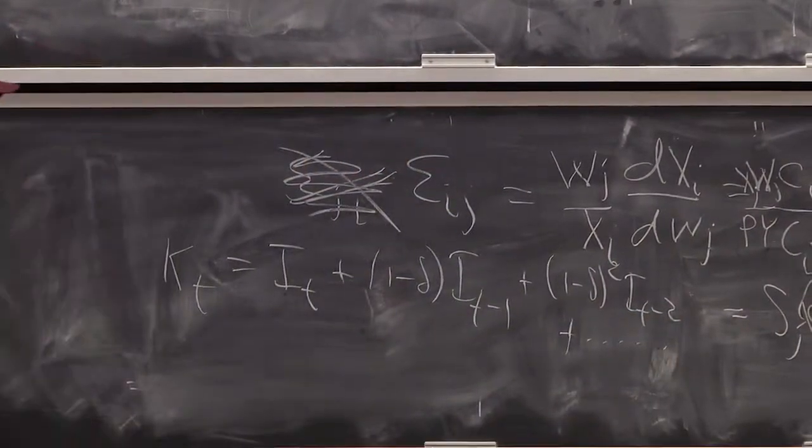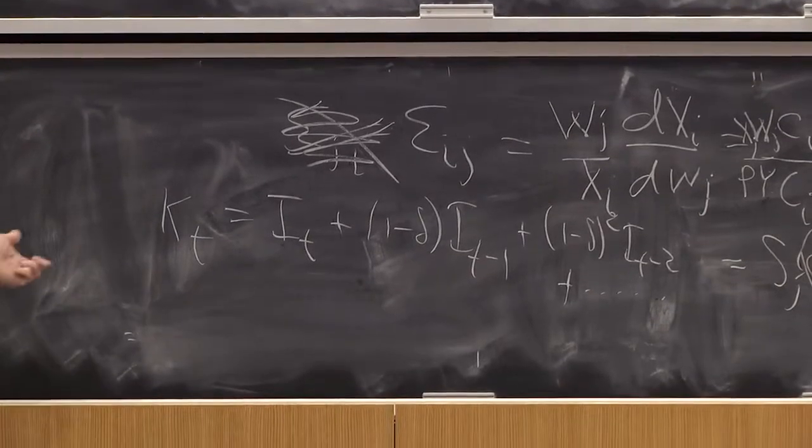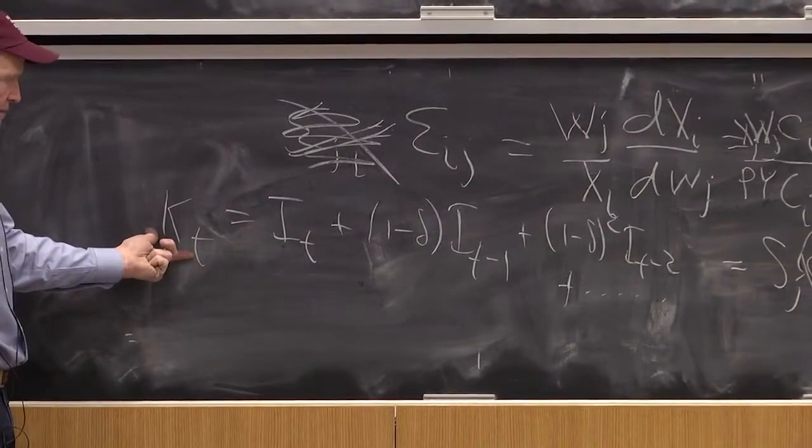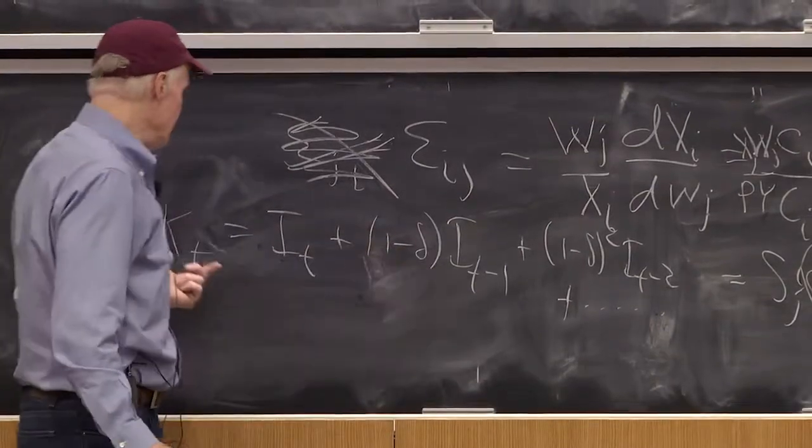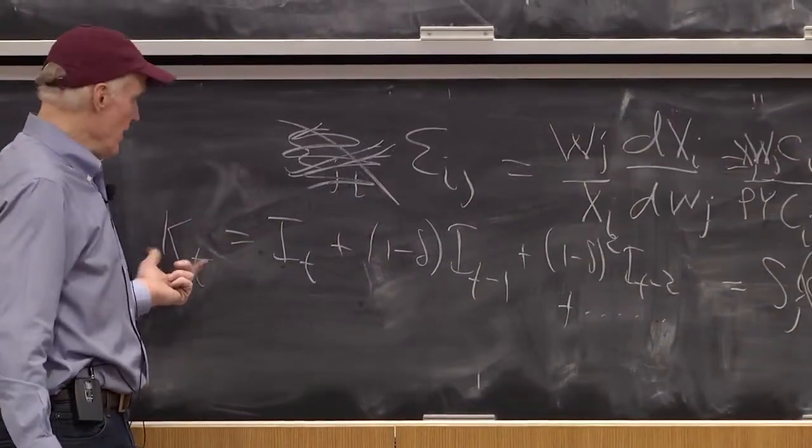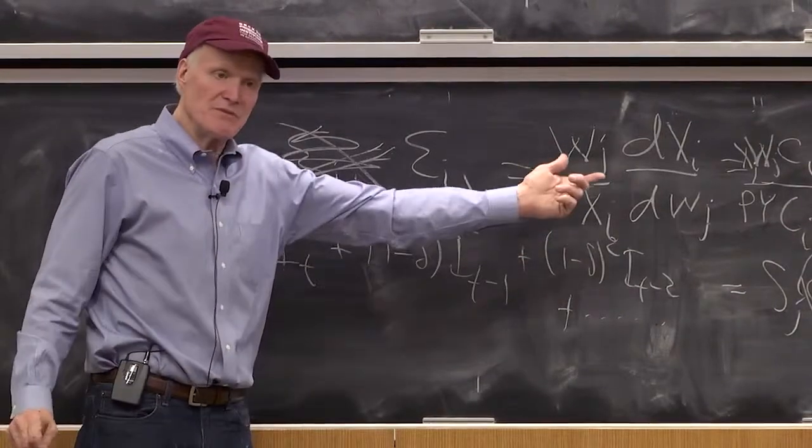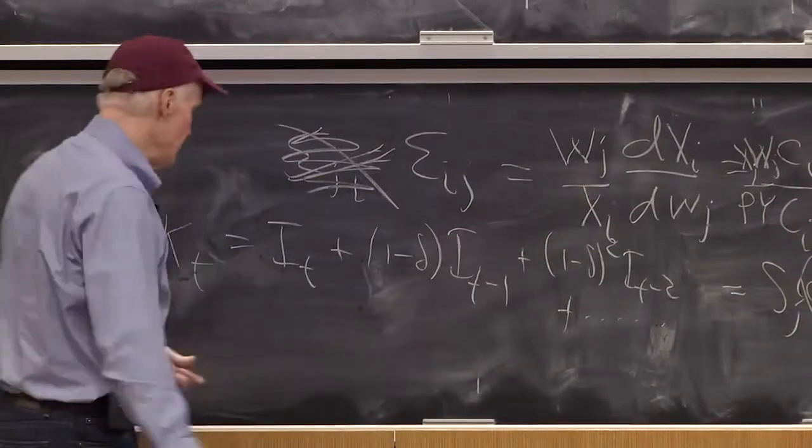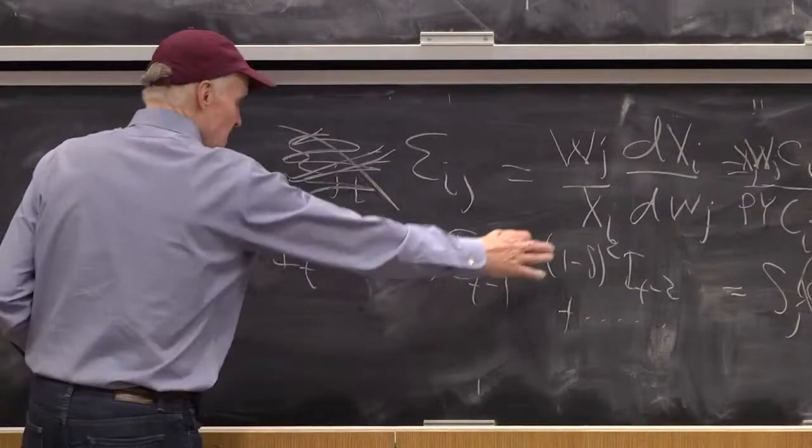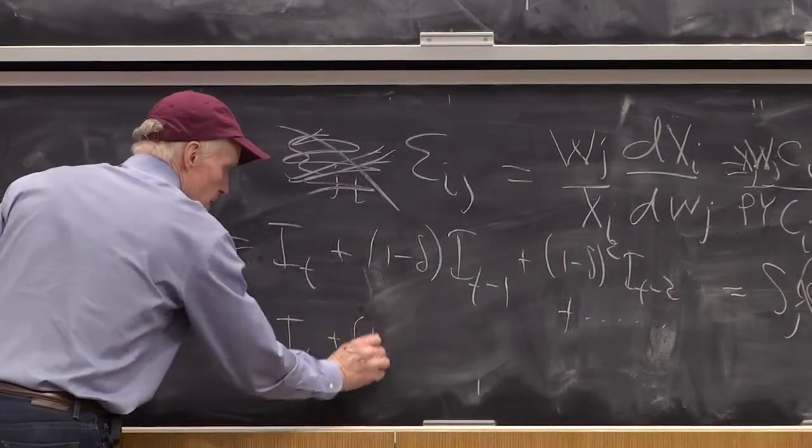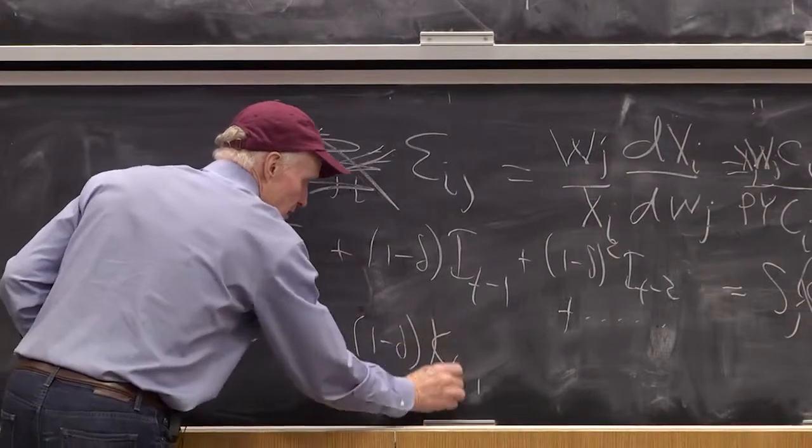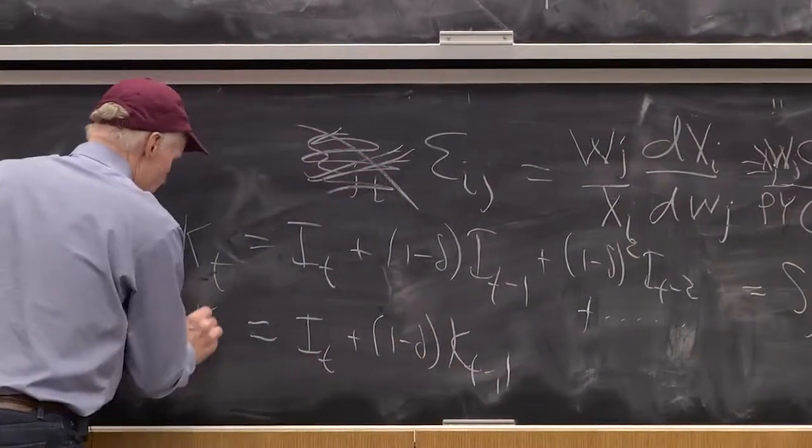I can build this capital aggregate using what's called the perpetual inventory method to calculate today's capital stock as just past investment with this fixed depreciation rate, which I can rewrite as It plus (1 minus delta) times Kt-1.